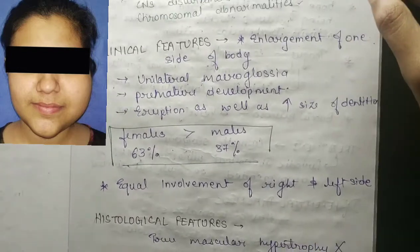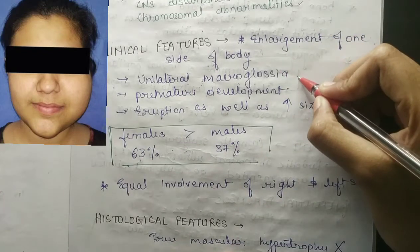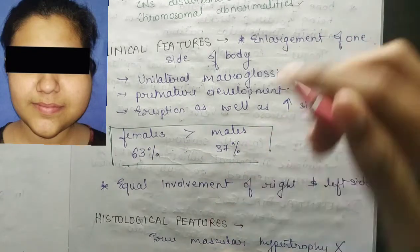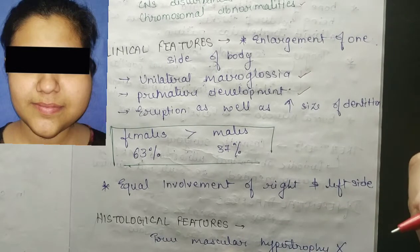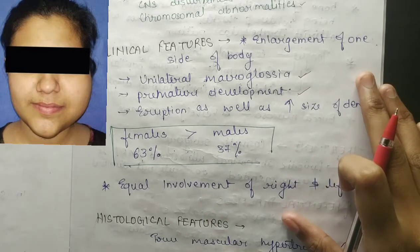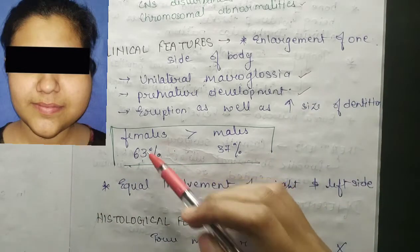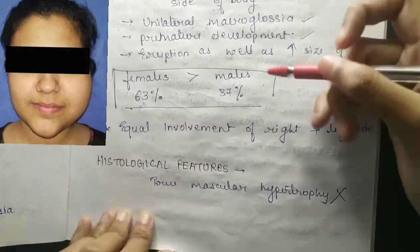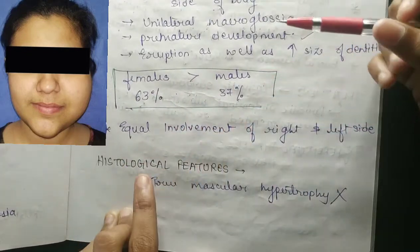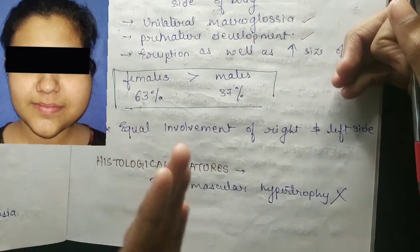Clinical features include enlargement of one side of the body, unilateral macroglossia, premature development, and eruption as well as increased size of dentition. This disturbance majorly affects females compared to males — females show 63% of cases and males only 37%.